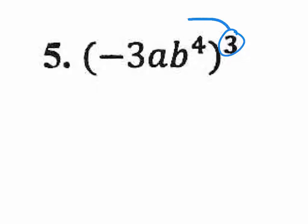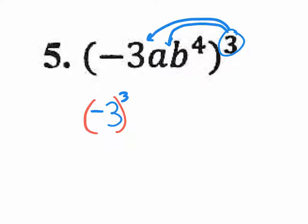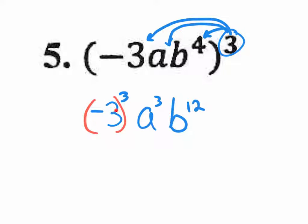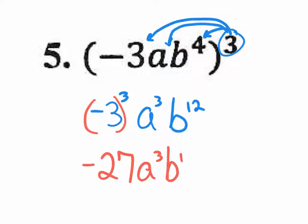Number 5 — distribute that outside 3 to each and every term. This is negative three to the third power, not 3 times negative 3. Keep the negative sign inside parentheses with the base, and put the 3 on the outside. Distribute to a: a to the third. Distribute to the 4 exponent: b to the twelfth. Now compute negative 3 times negative 3 times negative 3 — that's negative 27. Final answer: negative 27, a to the third, b to the twelfth.